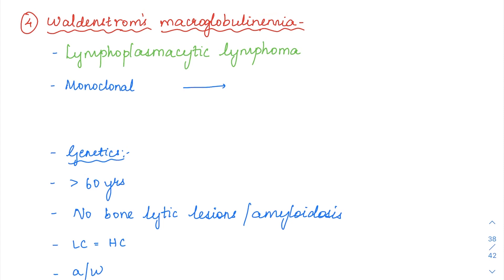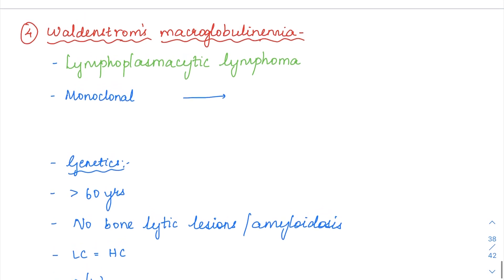Waldenstrom's macroglobulinemia is also called lymphoplasmacytic lymphoma because the morphology of this plasma cell dyscrasia includes lymphocytes, plasma cells, and lymphoplasmacytic cells. That is why the name lymphoplasmacytic lymphoma is given to Waldenstrom's macroglobulinemia.